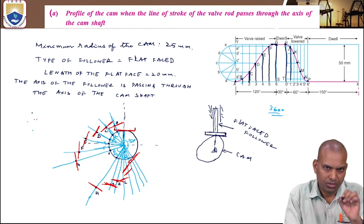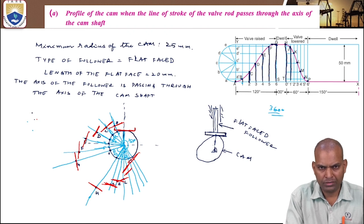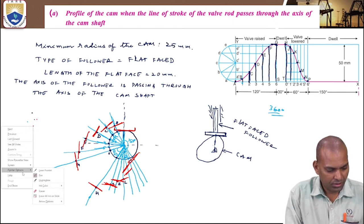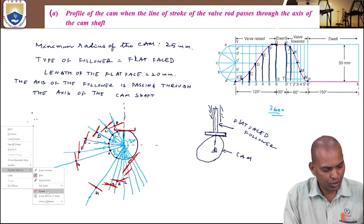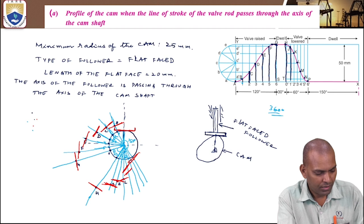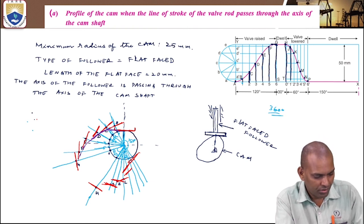At each contact point, draw a normal line (perpendicular) to the radial line. This represents the flat face of the follower — 10 millimeters on each side, making 20 millimeters total. Draw the flat faces at all the marked contact points. Then join all the flat face surfaces with a smooth curve, which gives the profile of your cam with a flat-faced follower.